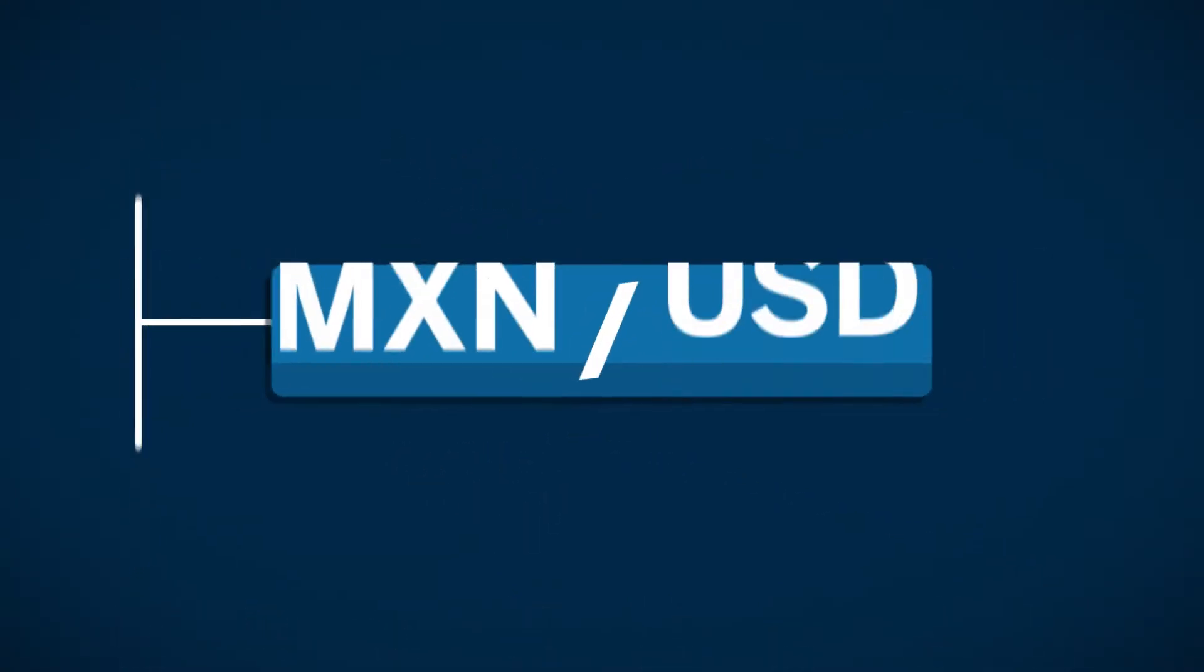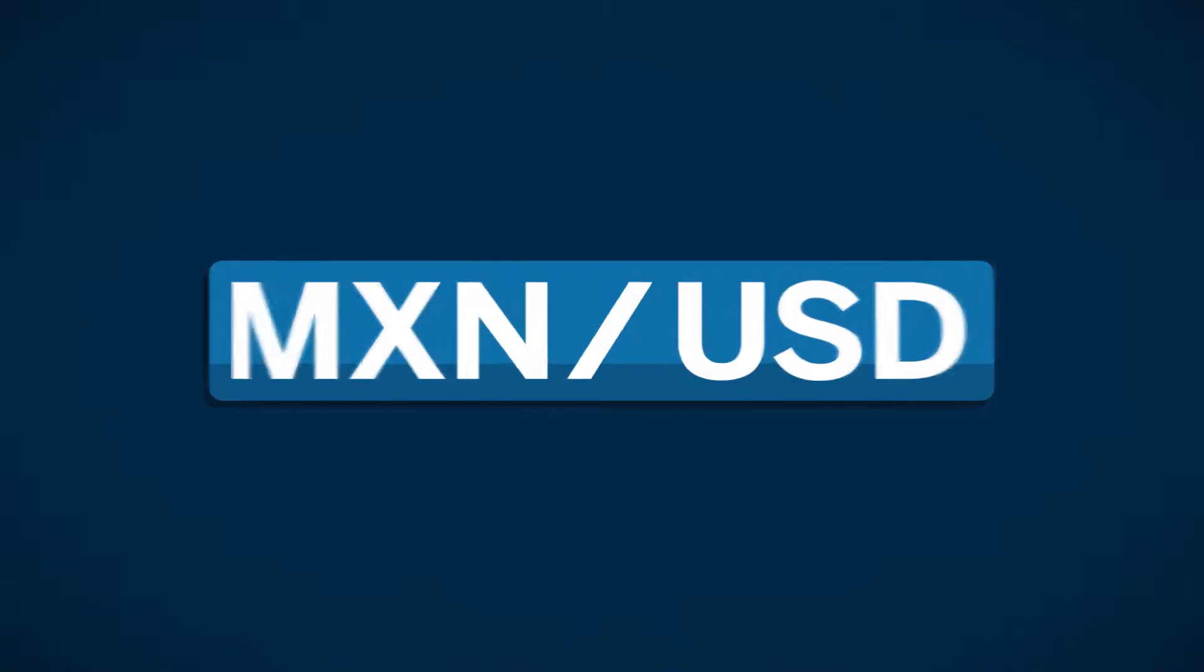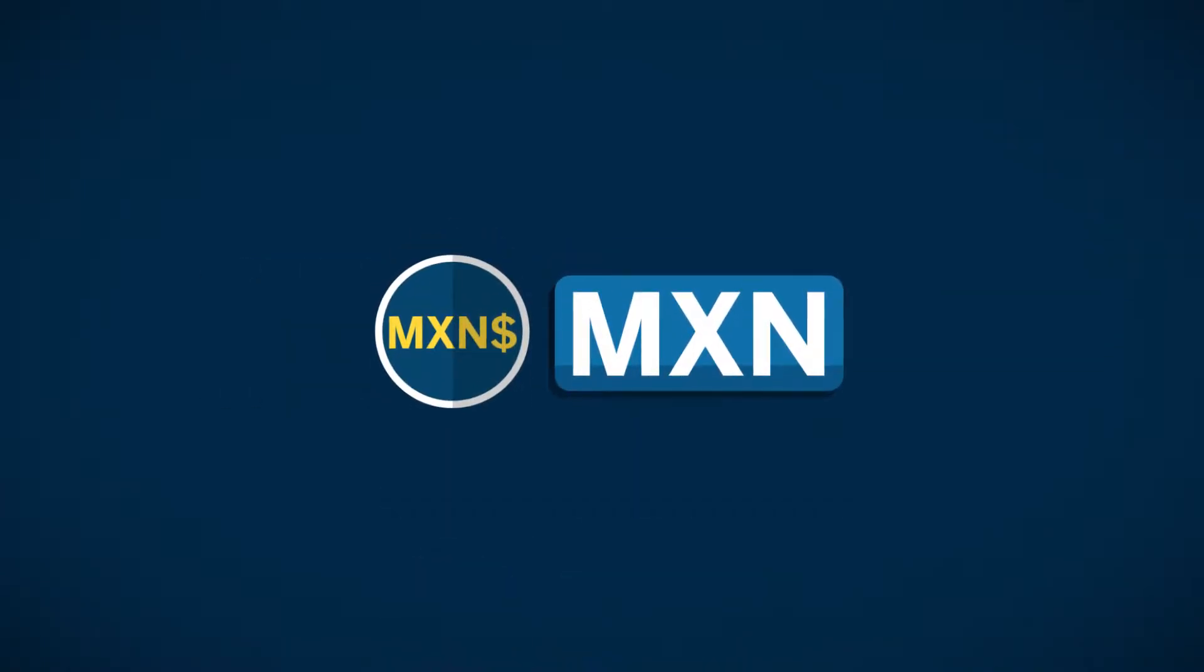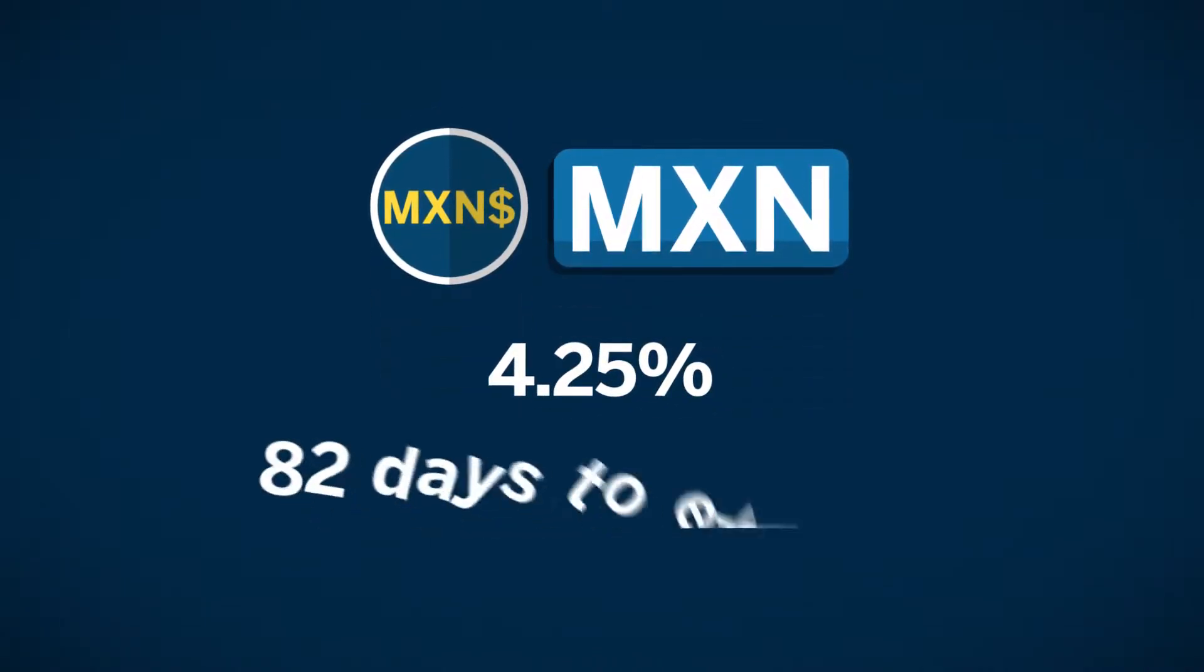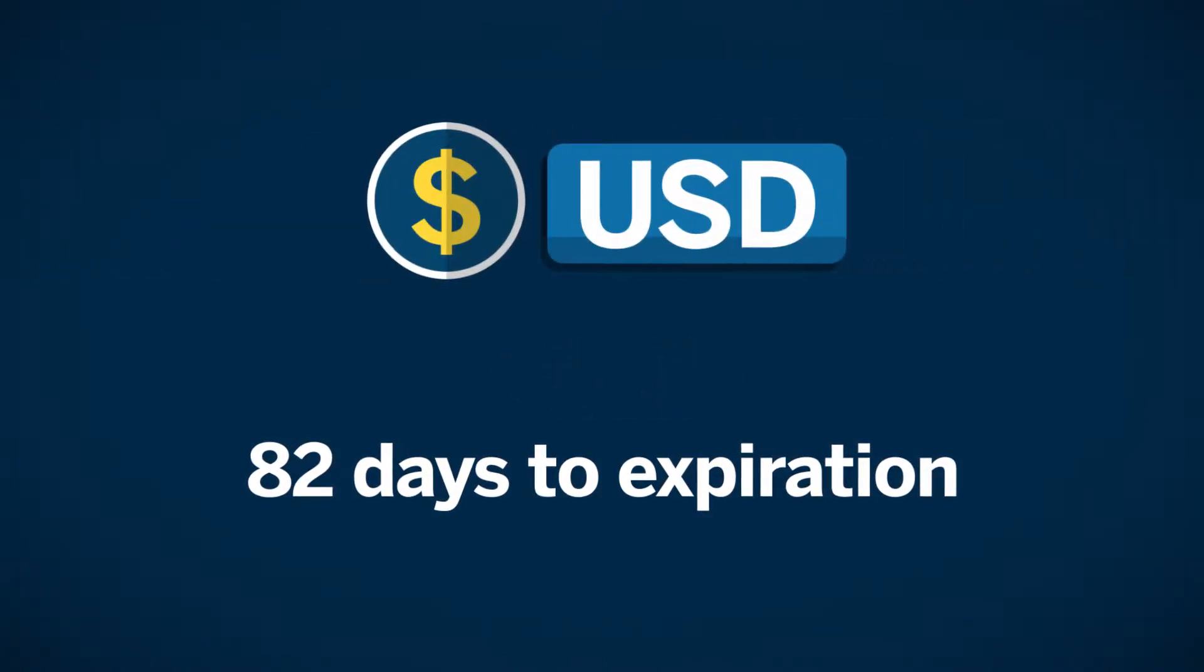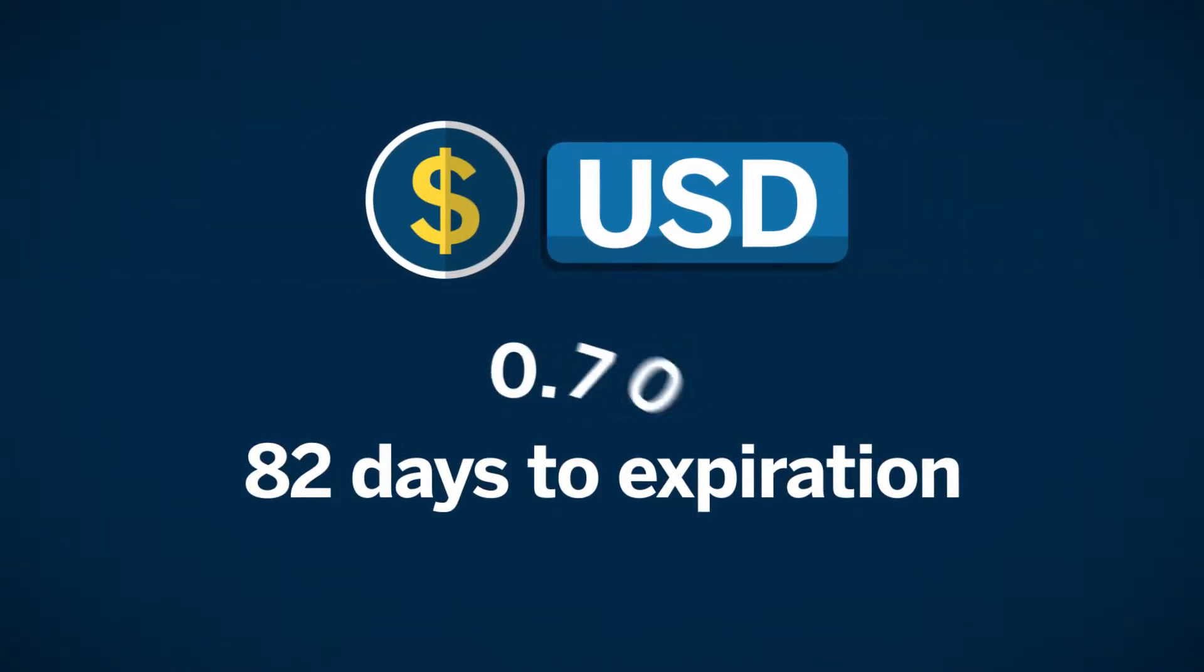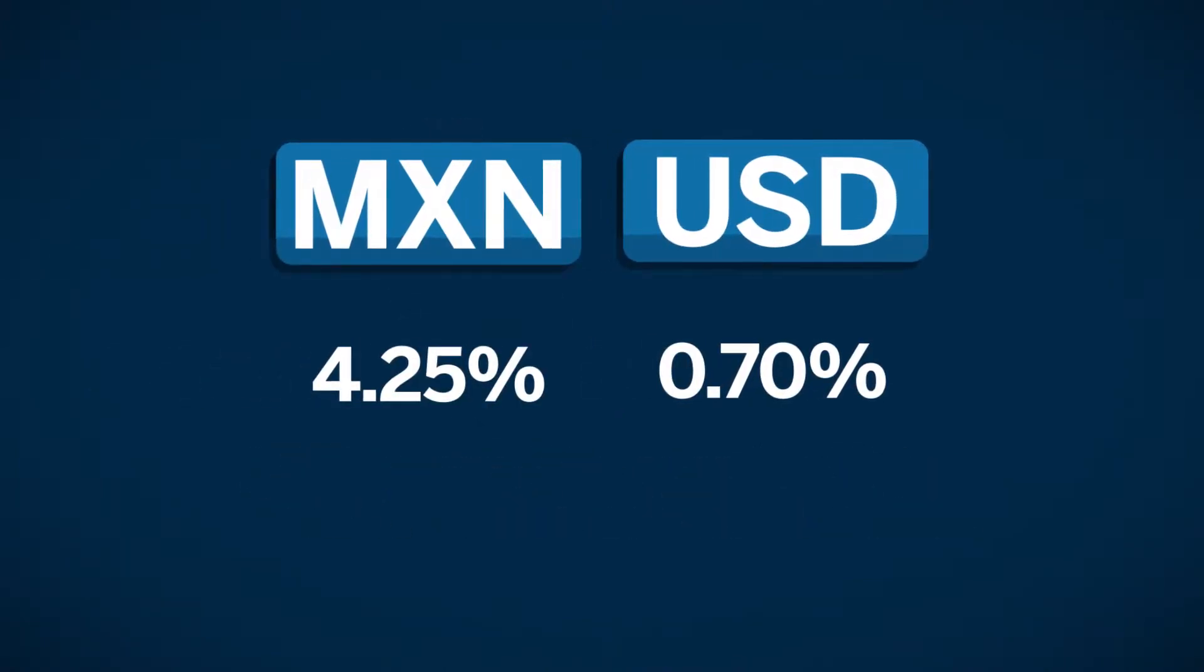Let's look at an example. Consider Mexican peso U.S. dollar futures, quoted in American terms as MXN USD. The Mexican peso is the base currency. Assume it has a short-term interest rate of 4.25% with a term settlement to expiration of 82 days. Assume the U.S. dollar has an equivalent-dated short-term interest rate of 0.70%. Notice that the U.S. dollar rate is lower than the Mexican peso rate. This implies positive carry.